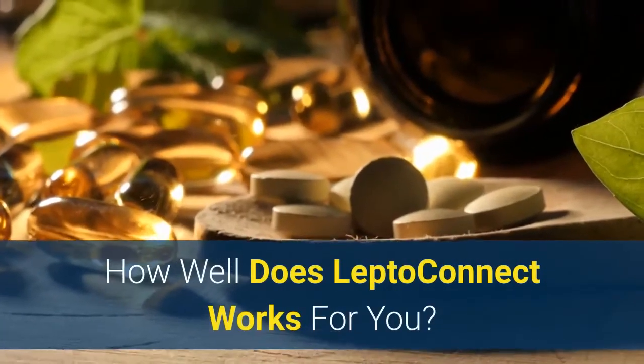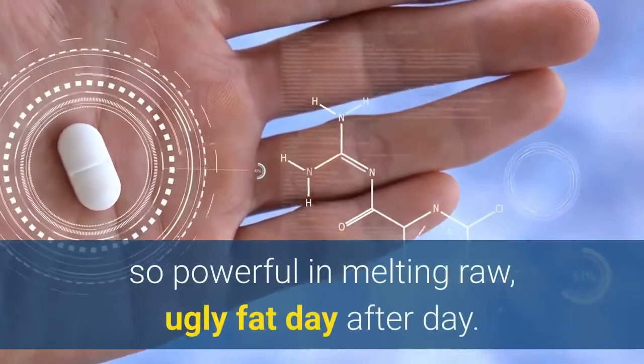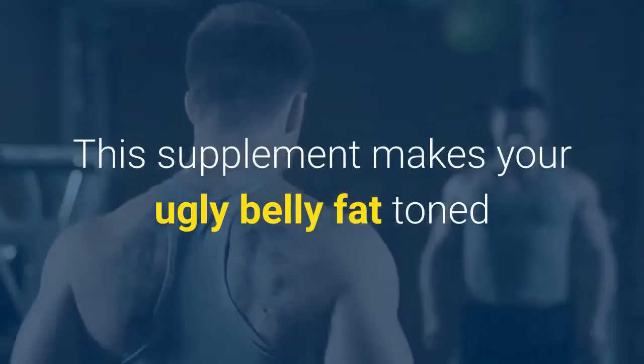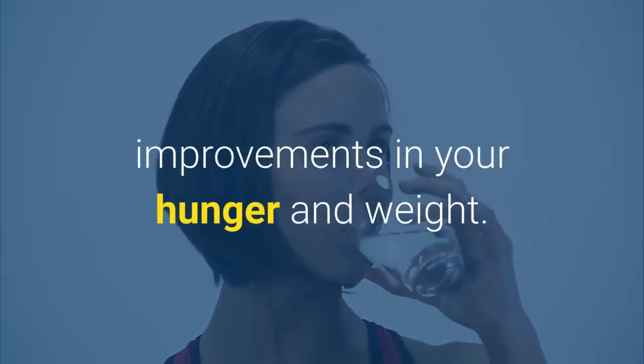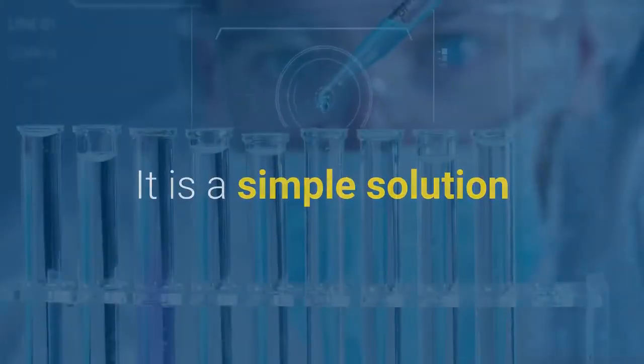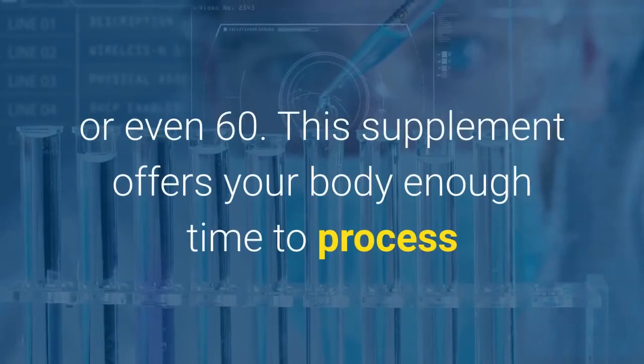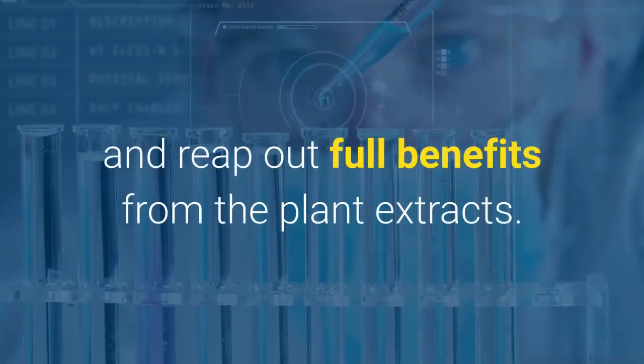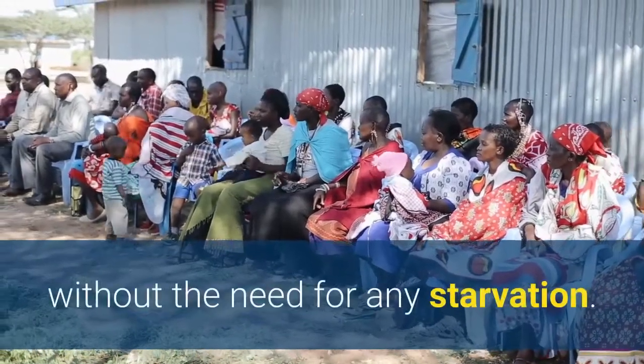How well does LeptoConnect work for you? LeptoConnect is a unique weight loss formula that works so powerful in melting raw, ugly fat day after day. This supplement makes your ugly belly fat toned and in good shape like before. By taking this pill as suggested, you can achieve the same dramatic improvements in your hunger and weight. It is a simple solution that helps you to reach the ideal weight, and it doesn't matter if you're 40, 50, or even 60. This supplement offers your body enough time to process and reap out full benefits from the plant extracts. The extra pounds can be lost safely without the need for any starvation.